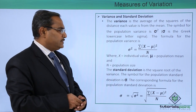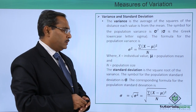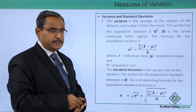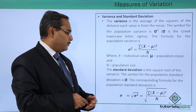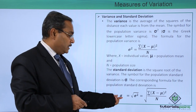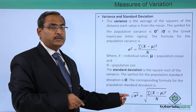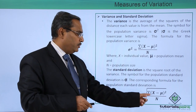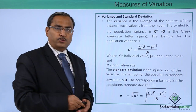The standard deviation is the square root of the variance. The symbol for the population standard deviation is sigma, and the corresponding formula is sigma equals the square root of the sum of (x minus mu) squared divided by N.